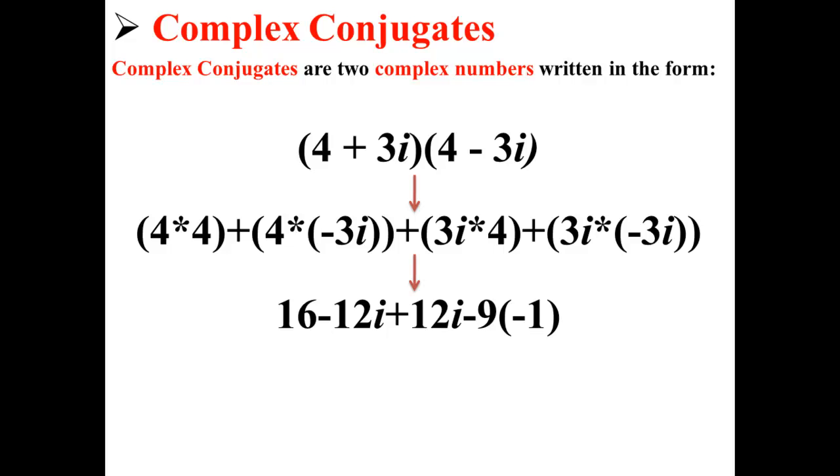We simplify this further to get 16 minus 12i plus 12i minus 9 times negative 1. We're multiplying by negative 1 because i times i is i squared, which is the same thing as negative 1. Because we multiplied i by i, we're able to write 9 times negative 1.